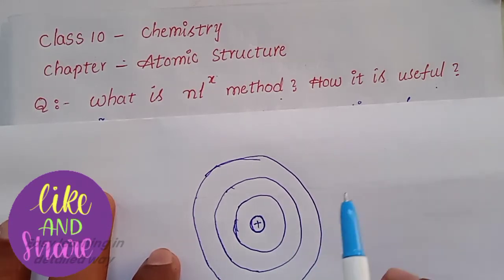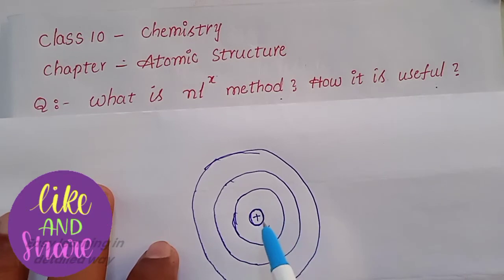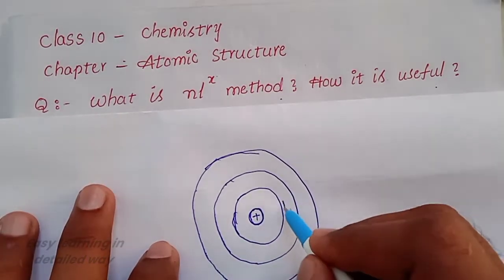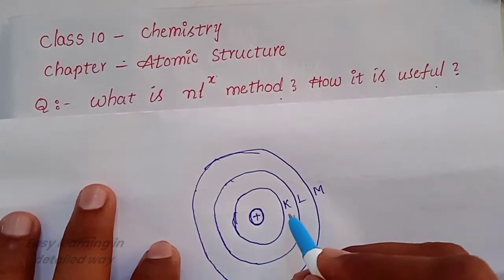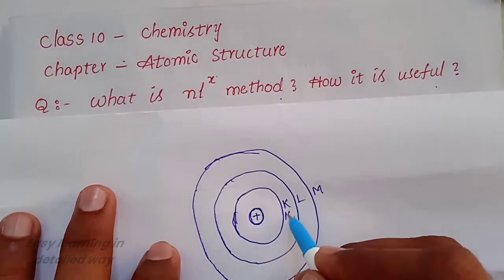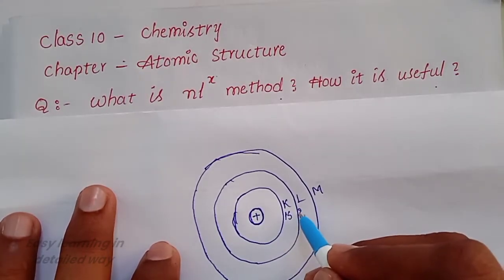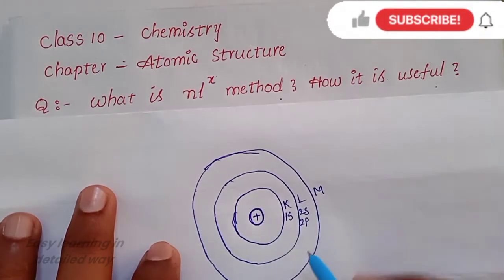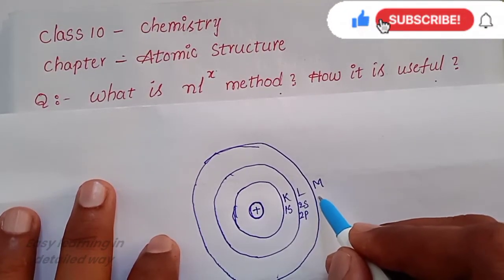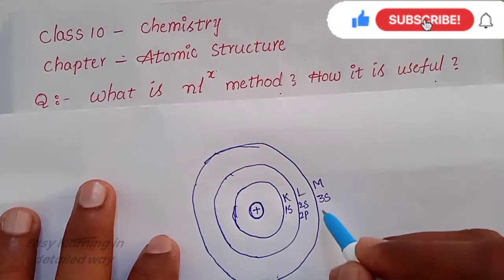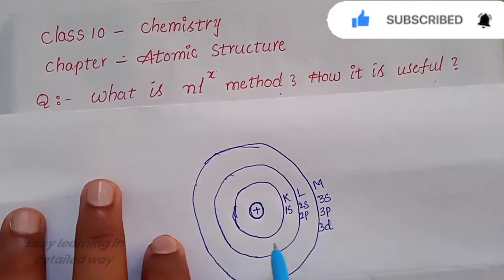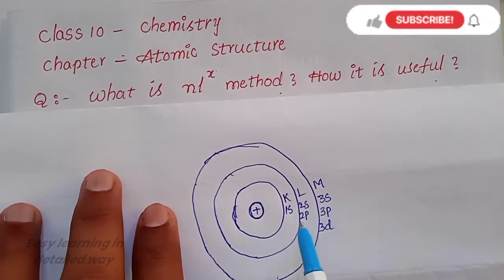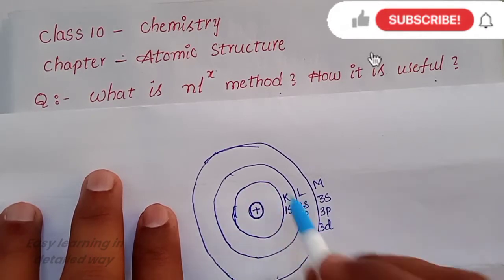This is an atom and these are circular paths around the nucleus. These paths are K, L, M, N and so on. In the K shell we have 1s orbitals; in the L shell we have 2s as well as 2p; and in the M shell you can see 3s, 3p and 3d orbitals. The orbitals in each orbit have a significant role.